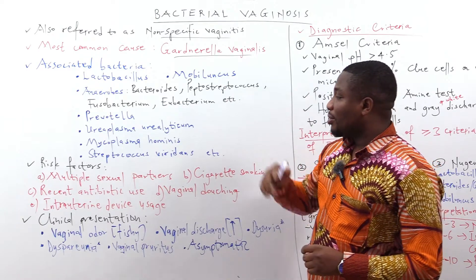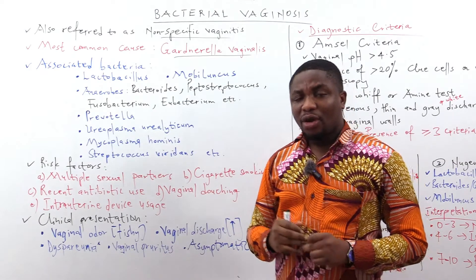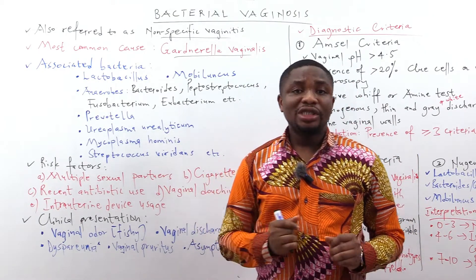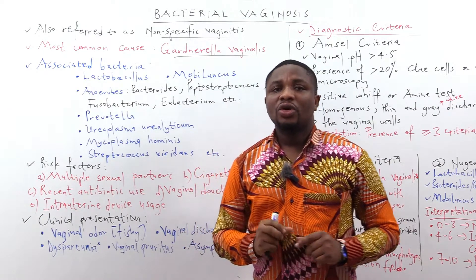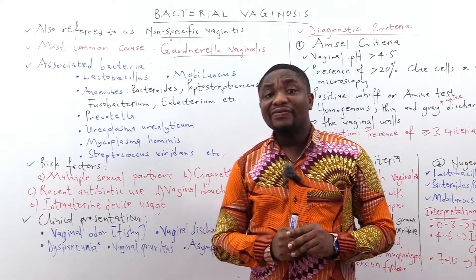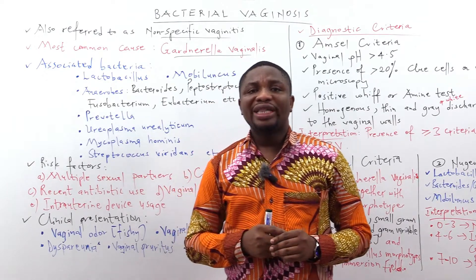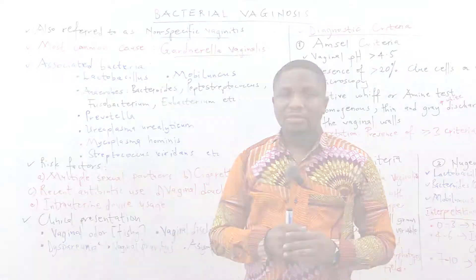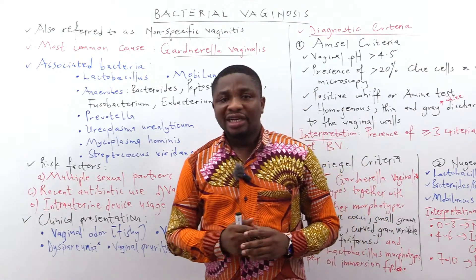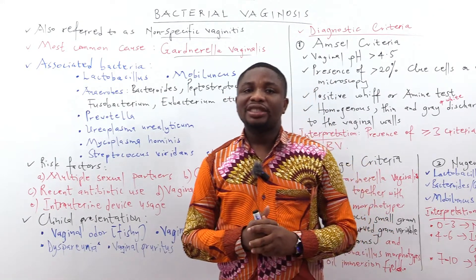Let's talk about the risk factors. Multiple sexual partners is one risk factor. You should note that bacterial vaginosis is not a sexually transmitted infection, because the criteria for an STI requires that the source should not be associated with endogenous flora — and in bacterial vaginosis, the source of infection is in the endogenous vaginal flora. Hence, it cannot be classified as an STI.